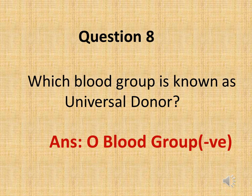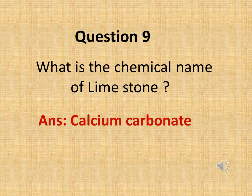The next question is: which blood group is known as the universal donor? The next question is: what is the chemical name of limestone? The answer is calcium carbonate.